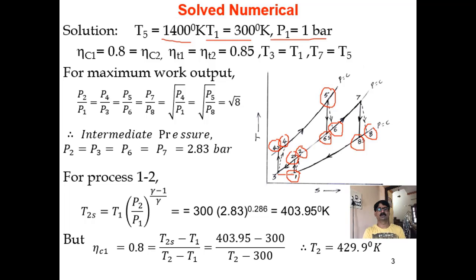Process 3 to 4S is isentropic compression; 3 to 4 is actual compression. Process 5 to 6S is isentropic expansion; 5 to 6 is actual expansion in the first turbine. Process 7 to 8S is the second turbine. The overall pressure ratio P4 by P1 equals 8. Since pressure ratios are equal, P2/P1 = P4/P3 = P5/P6 = P7/P8 = square root of overall pressure ratio = square root of 8.